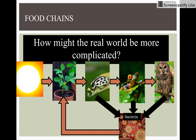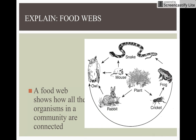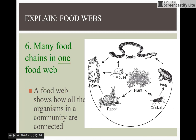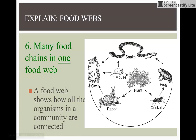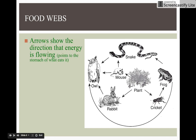Now, how might the real world be more complicated? A food web shows how all the organisms in a community are connected. This is the food web — there are many different organisms and many different components that make up a complicated food chain. The arrow shows the direction the energy is flowing; it points to the stomach of what eats it.